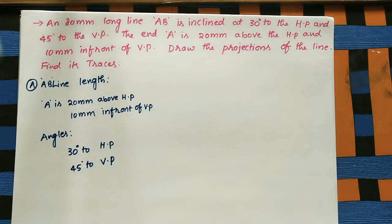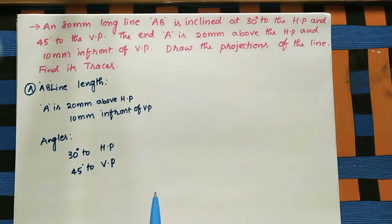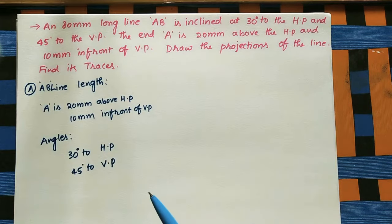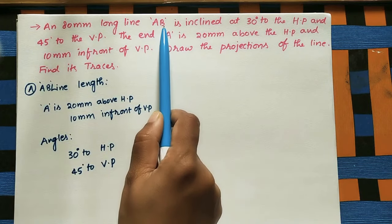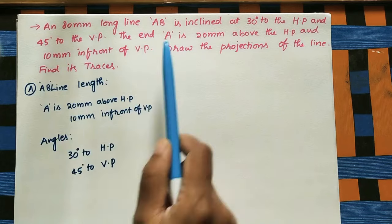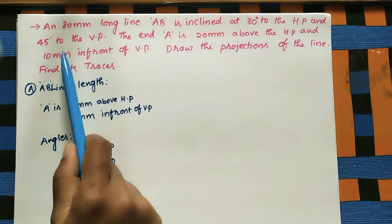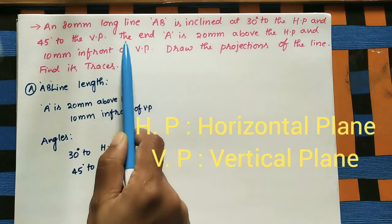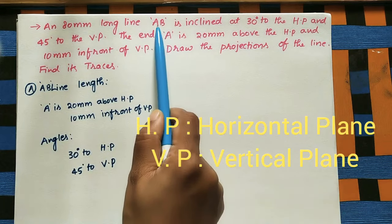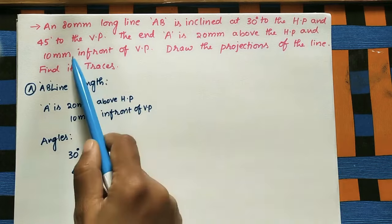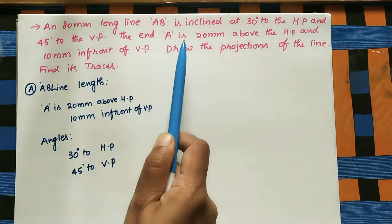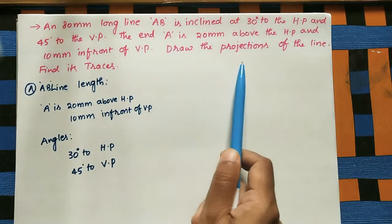Welcome to the channel. Let us discuss how to find the projections of an inclined line and also find its traces. The given data: line AB is 80 mm long, inclined at 30 degrees to the HP and 45 degrees to the VP. End A is 20 mm above HP and 10 mm in front of VP.